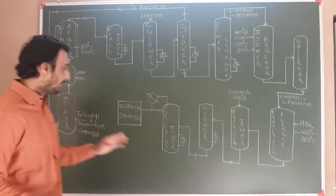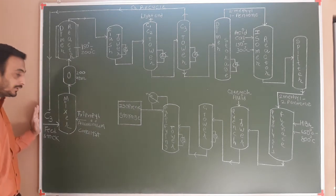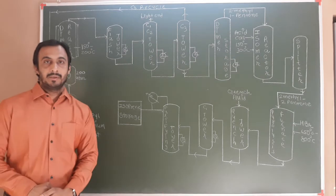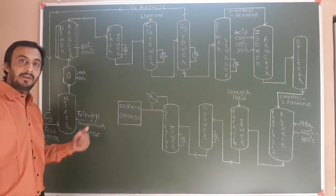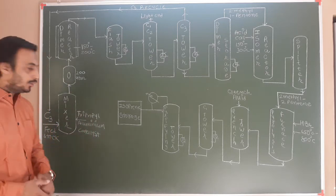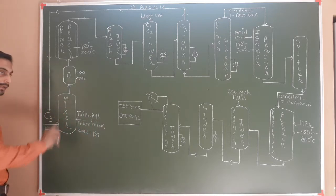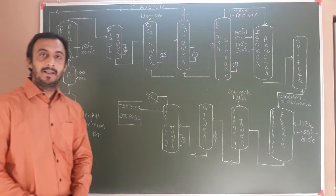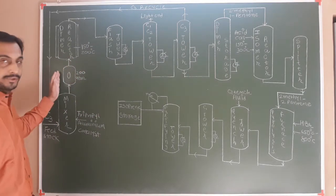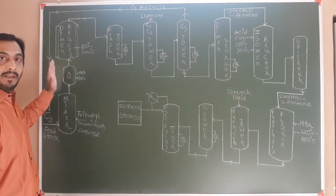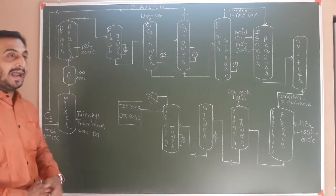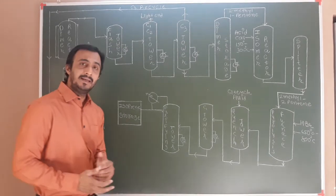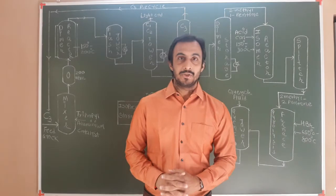We will start with the very first step. C3 feedstock is taken into a mixture where it is mixed with tri-propyl aluminum catalyst. Both compounds are taken together and then compressed to 200 atmospheric pressure in a compressor. The compressed mass is then taken into a dimer reactor.